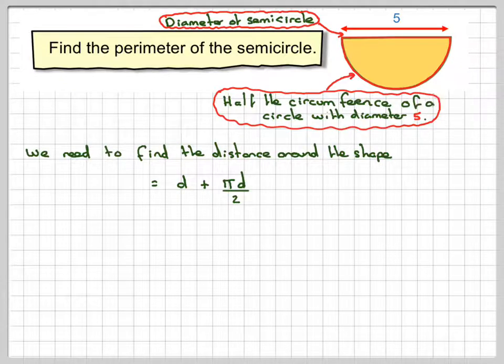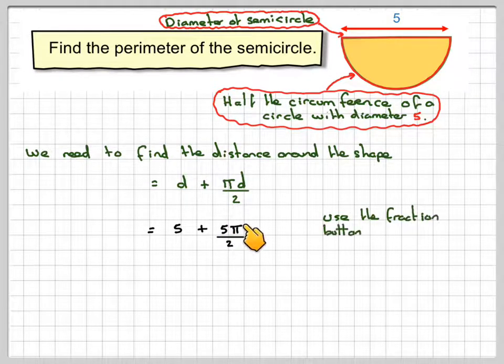Putting the numbers in, we've got 5 plus pi times 5 divided by 2. Now, best to do this calculation using the fraction button, so just write it in exactly as it is, pressing the fraction button at this point.